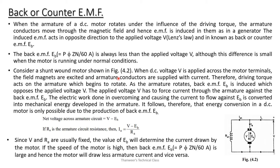Consider a shunt wound motor. When DC voltage V is applied, the field magnets are excited and the armature conductors are supplied with current. Therefore a driving torque acts on the armature and it begins to rotate. As the armature rotates, back EMF is induced, which opposes the applied voltage V.